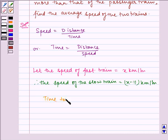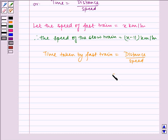Therefore, time taken by fast train is equal to distance upon speed. Total distance is given to be 132, so it is equal to 132 by x.